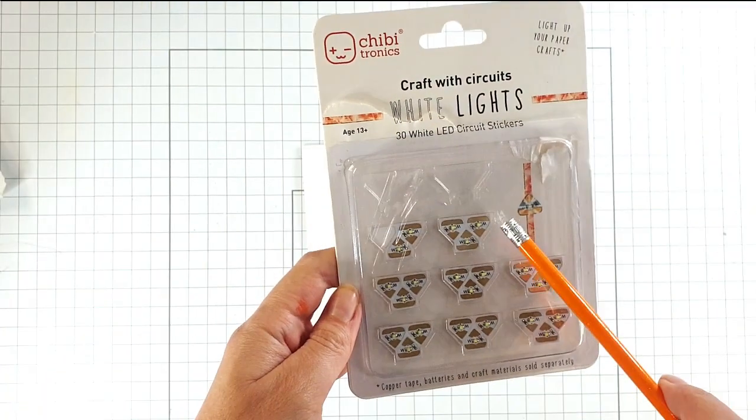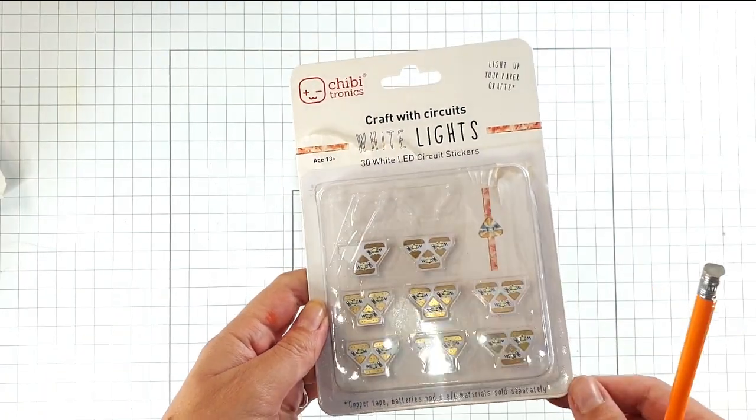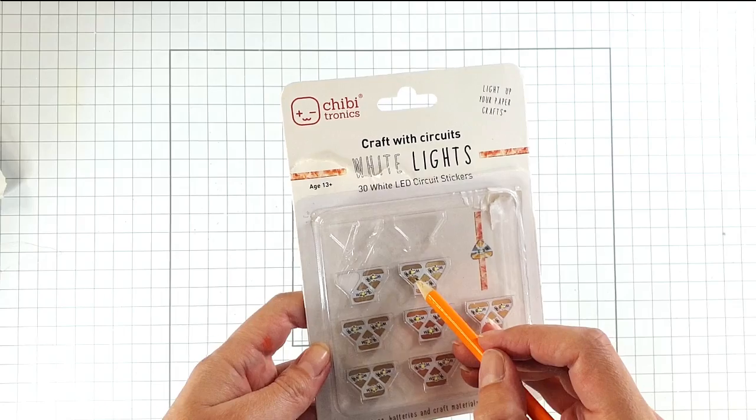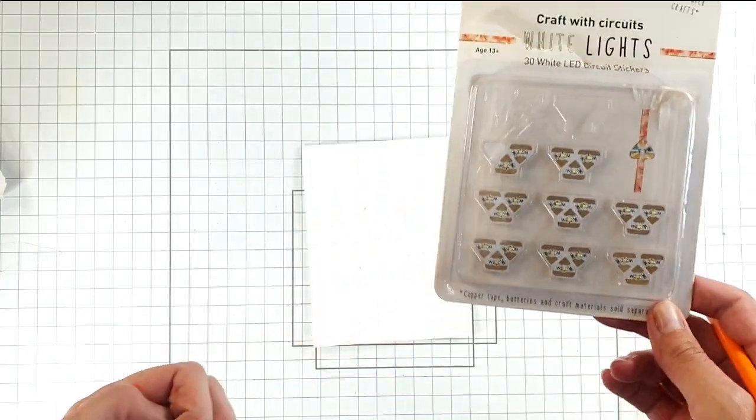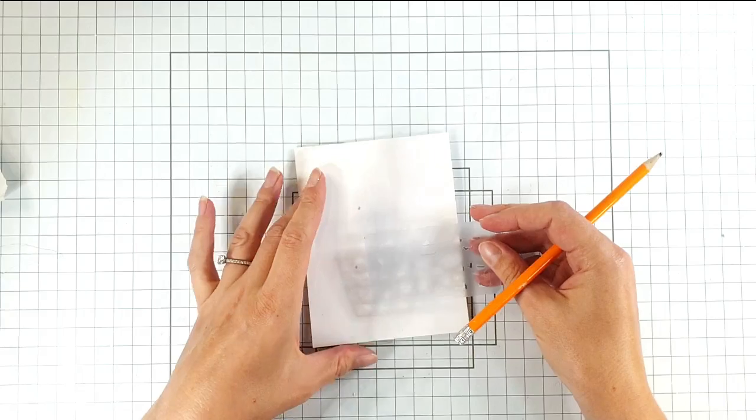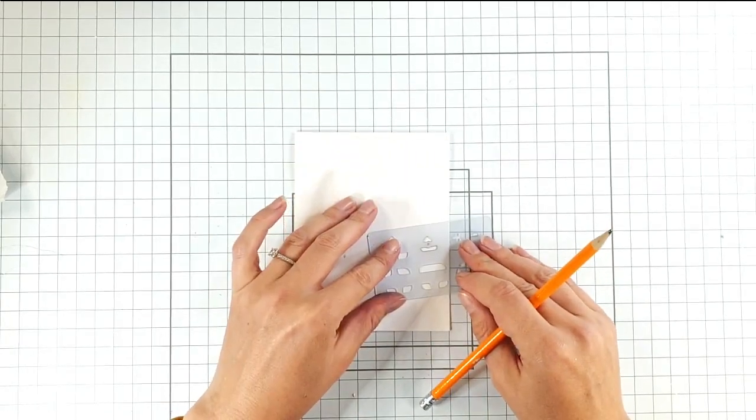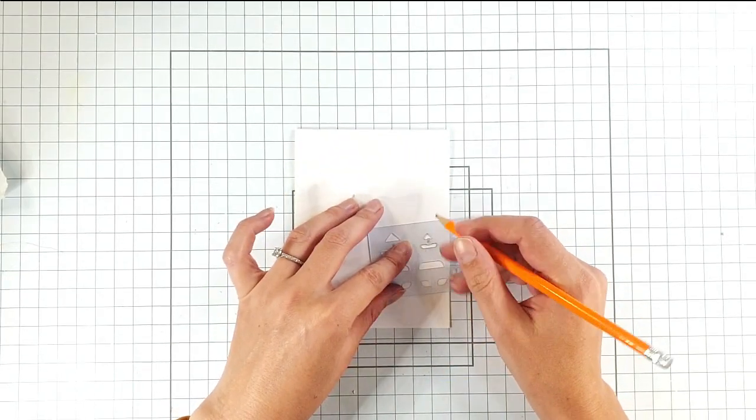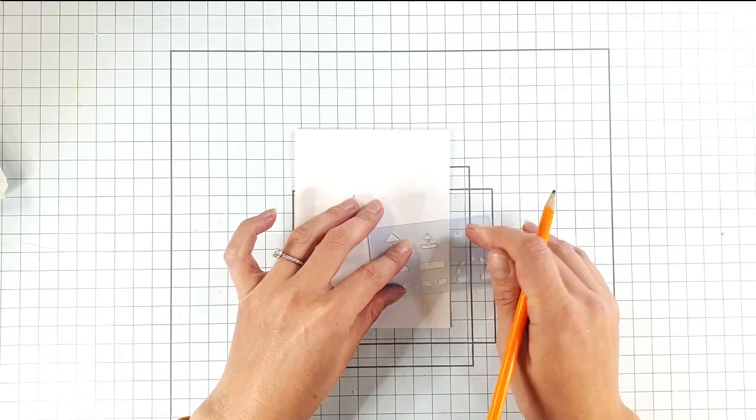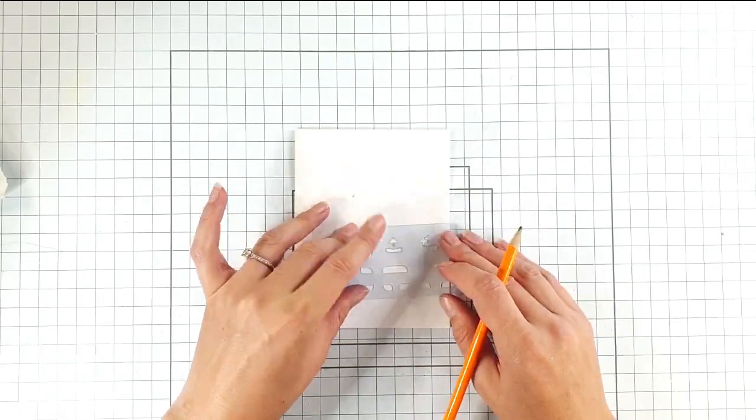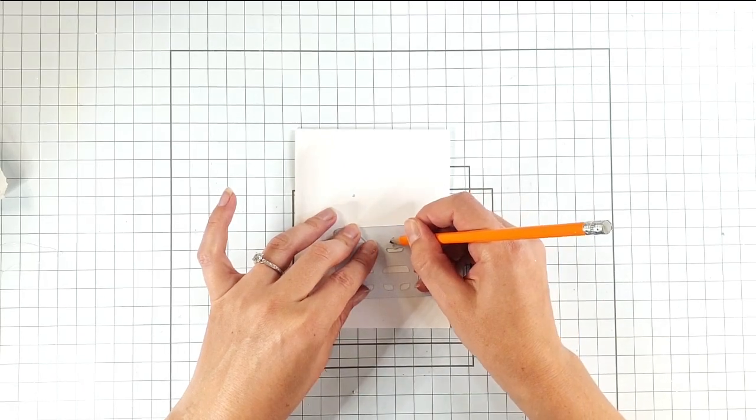So then you can see my lights are little triangles with a negative sign at the point and a positive sign at the flat bit. So I'm going to grab my stencil and I'm going to put it so the dot is in the middle of this bit that's the same size of the lights, and then I'm going to draw through there so that I know where I want my lights to go. So I want them all to be up the same way apart from this one at the top which I'm going to put upside down.